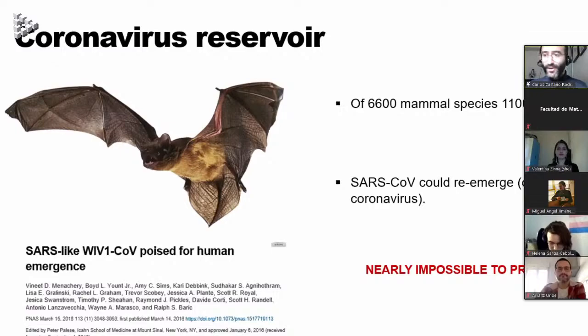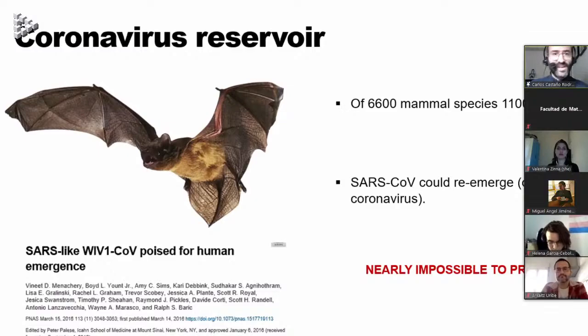We cannot predict how the virus is going to adapt to a new species: which genes it is going to mutate, and what the phenotypes of these new mutations will be — whether it will be more or less pathogenic. It is very difficult to predict. This is why we did not see this pandemic coming.